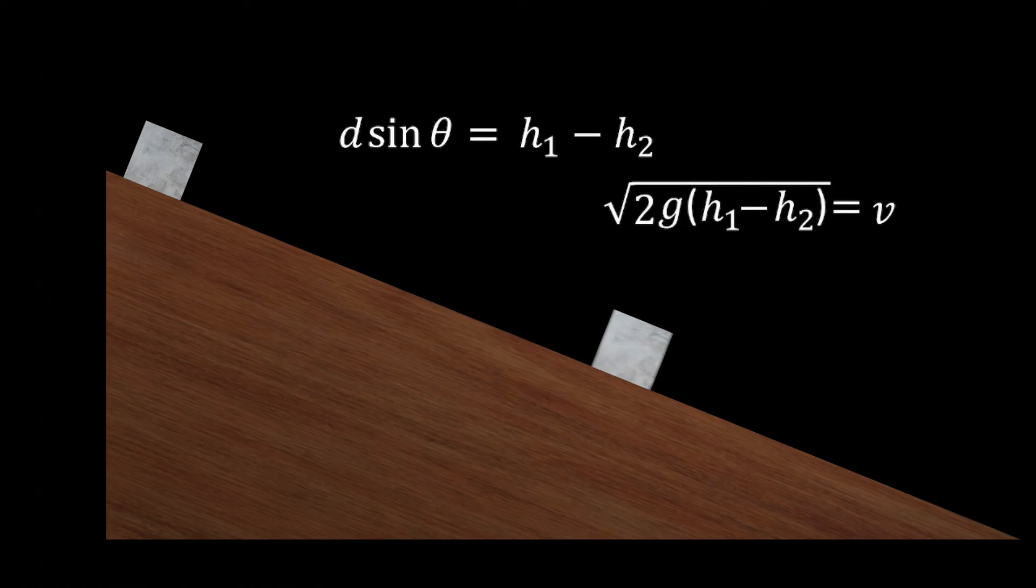We can make this replacement in our velocity equation, and we're done. The velocity is equal to the square root of two times g times d times sine theta.